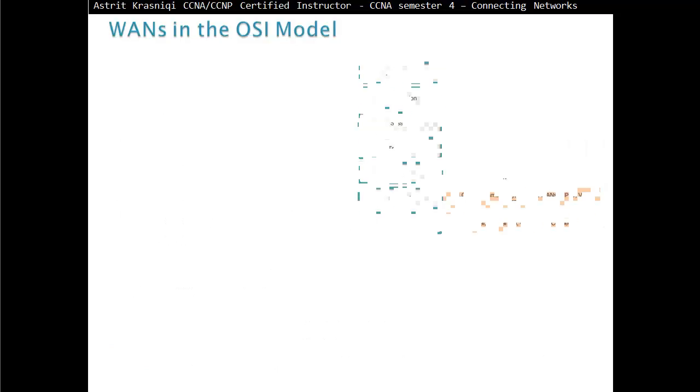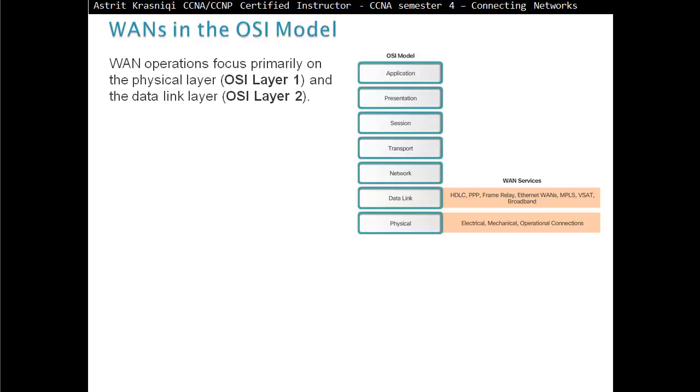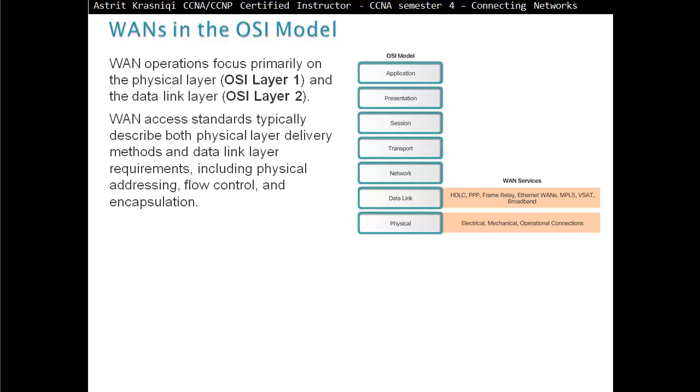Wide Area Network Operations. WANs in the OSI model. WAN operations focus primarily on the physical layer, OSI layer 1, and the data link layer, OSI layer 2. So the two layers that Wide Area Networks work on is layer 1 and layer 2. In the TCP/IP model, it's network access. WAN Access Standards typically describe both physical layer delivery methods and data link layer requirements, including physical addressing, flow control, and encapsulation.